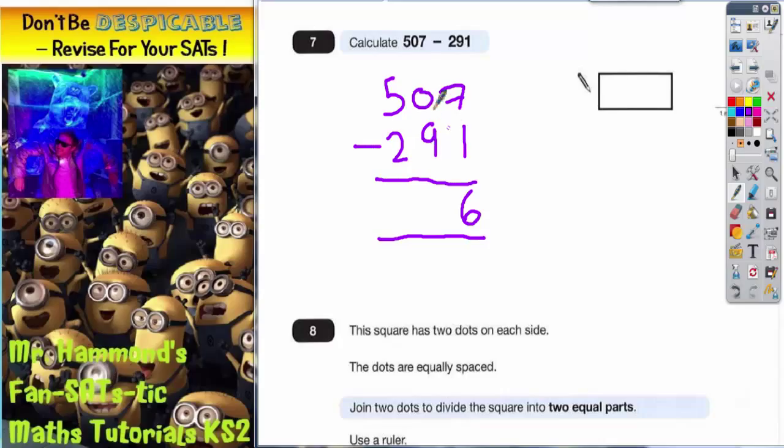So borrow one, that becomes a four, and the one that I borrowed turns that into ten. Ten take away nine is one, and four take away two is two.